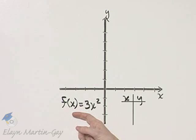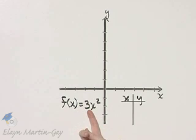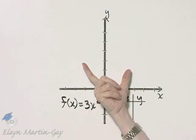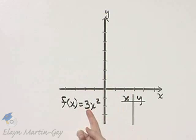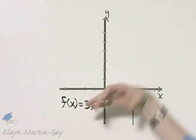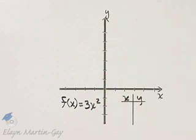We want to graph this quadratic function, and because it is a quadratic function the graph is a parabola. Because the coefficient of x squared is a positive number, the parabola opens upward. And remember, because this number is greater than 1, it has the effect of stretching the parabola, or making it look a little bit thinner.